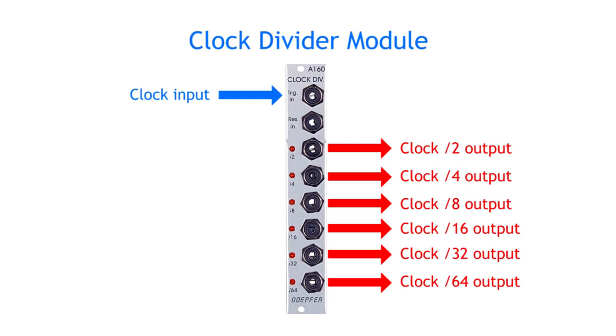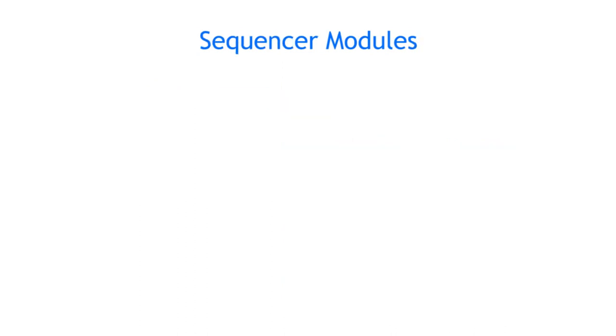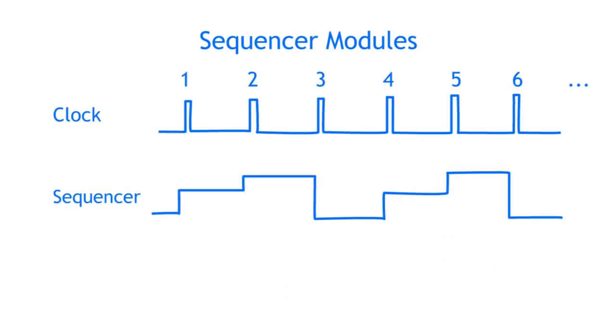After you have a bunch of clock signals, the next step could be to hook up a sequencer. A sequencer, at its most basic level, will cycle through or switch between variable output signals at every clock pulse. Like this you can create melodies, rhythmic gates or triggers, or other effects.